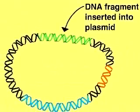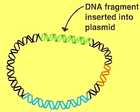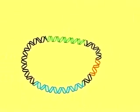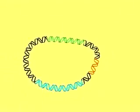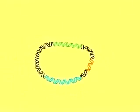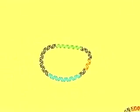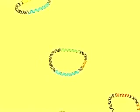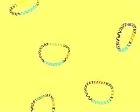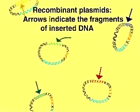Each of these recombinant plasmids contains the inserted DNA fragment, an ampicillin resistance gene, and a replication origin. A pool or library of circular recombinant plasmids is thus created. Each plasmid carries a unique fragment of foreign DNA, as indicated by the colored arrows.